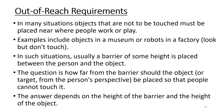Going into the details of out-of-reach requirements: in many situations, objects that must not be touched are placed near where people work or play — best examples are a museum or robots in a factory, with signs like 'look but do not touch.' A barrier of some height is placed between the person and the objects. The ergonomist's challenge is determining how far the barrier should be placed so people cannot touch the exhibits, while still getting a good view. This answer depends on the height of the barrier and the height of the object.